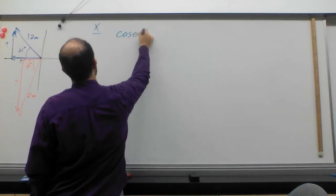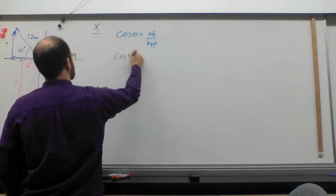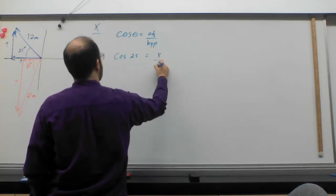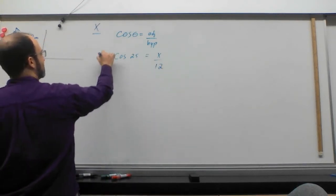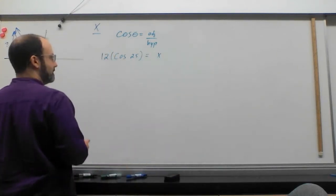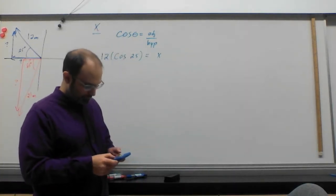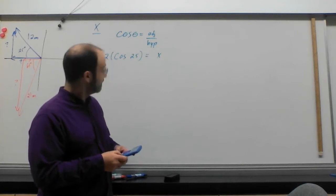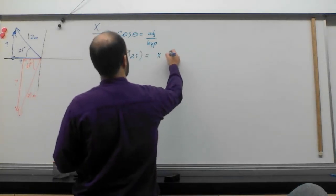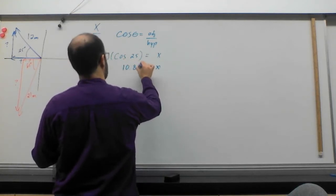So that's cos theta equals adjacent over hypotenuse. So cos theta would be cos 25 equals adjacent, which is what I'm looking for. I'm going to make that x divided by the hypotenuse, which is 12. So I'm going to move the 12 over here. And just a little bit of algebra, that'll give me my x. So I take out my trusty calculator. I'm going to do cos of 25 times 12. And that tells me that the answer is 10.88 meters.